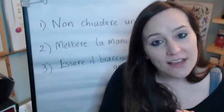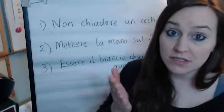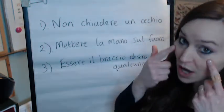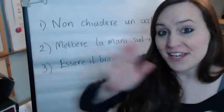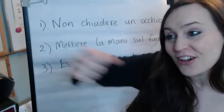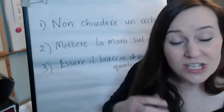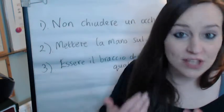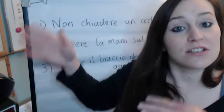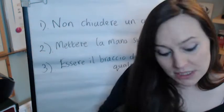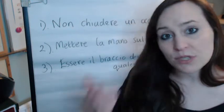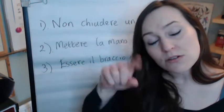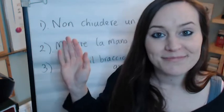We have here the verb chiudere, which means to shut or to close. That can be used for your eyes, closing a book, closing a window or a door, or for shops. The past participle chiuso can be used to say whether something is open or shut — like a little sign on the door: chiuso, it's closed.